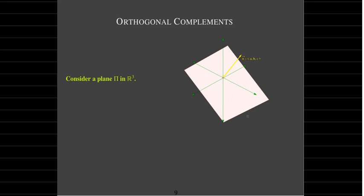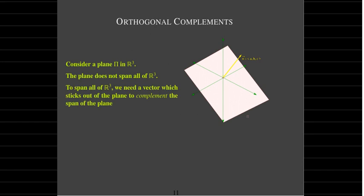Now let's talk about orthogonal complements. Starting with a plane in R3 which passes through the origin — we'll call this plane pi. The plane does not span all of R3, but if I took a basis for pi and added a vector which sticks out of the plane a little bit, that would complement the basis for pi and together they would span R3. So we need another vector not in the plane, and that's when we start thinking about this word orthogonal.